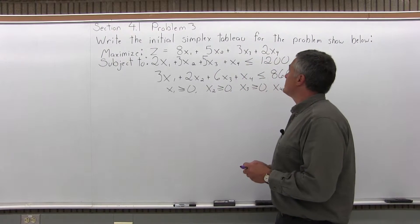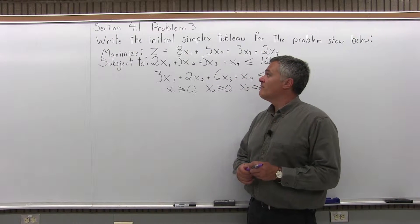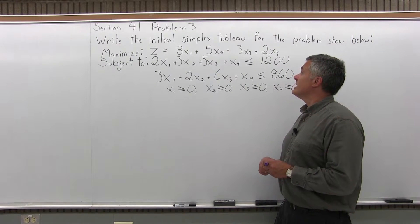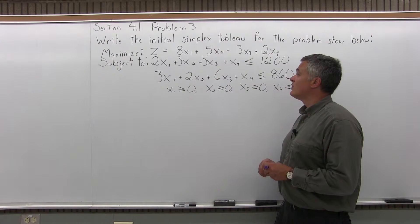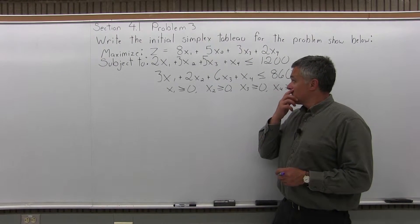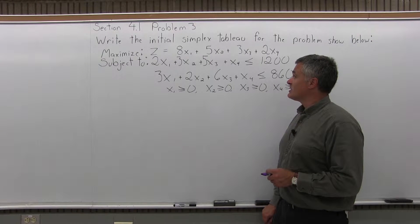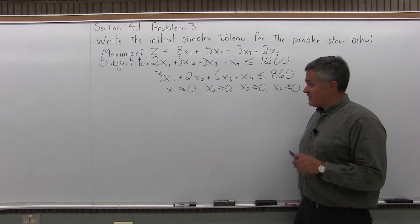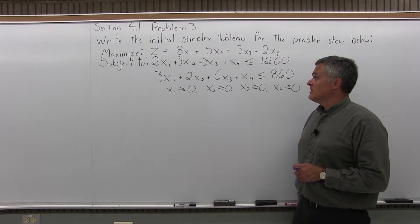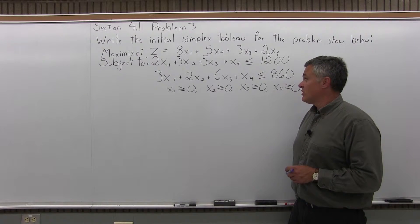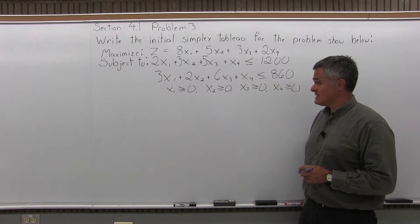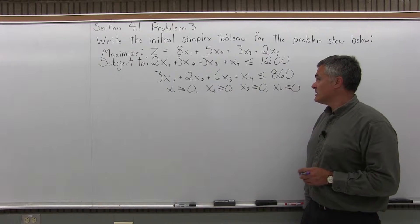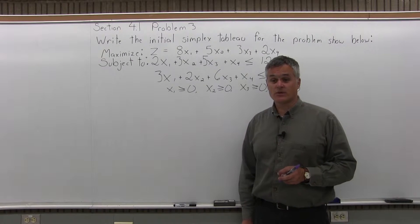It says write the initial simplex tableau for the problem shown below, and we have maximize z equals 8x1 plus 5x2 plus 3x3 plus 2x4, subject to 2x1 plus 3x2 plus 5x3 plus x4 is less than or equal to 1,200, and 3x1 plus 2x2 plus 6x3 plus x4 is less than or equal to 860, and x1, x2, x3, x4 are all greater than or equal to 0.